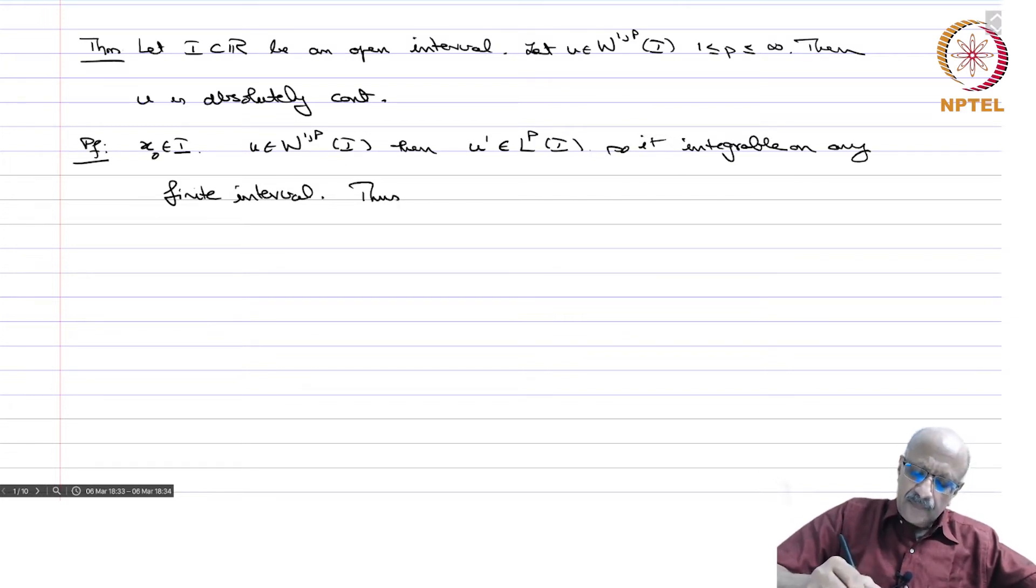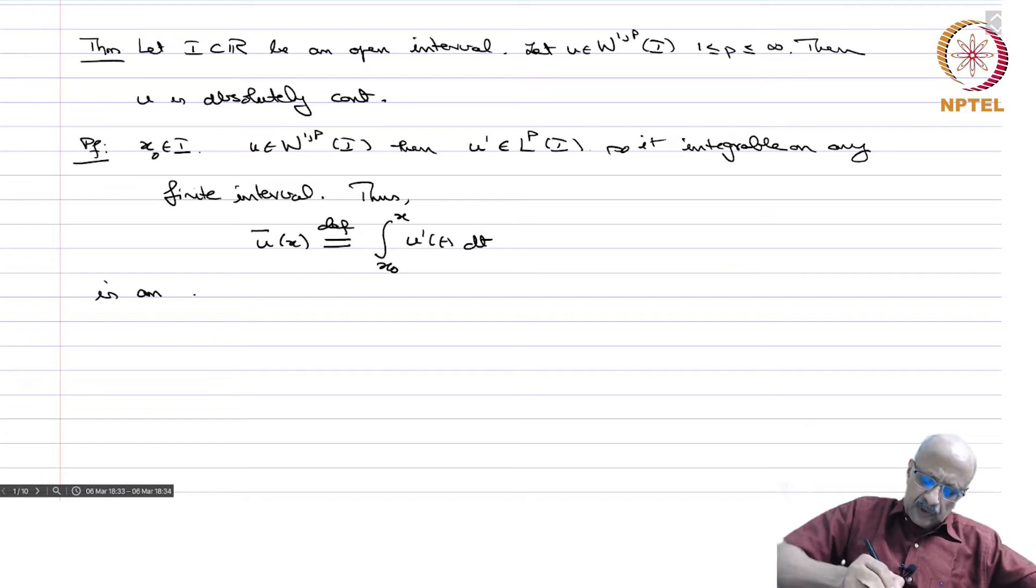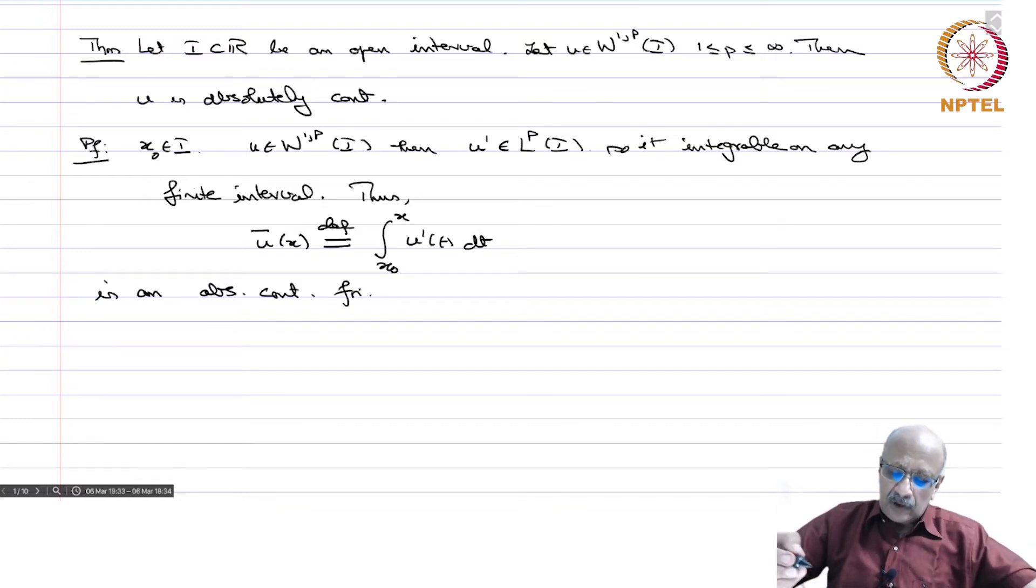Thus u̅(x) which is defined as integral x₀ to x of u'(t) dt is an absolutely continuous function. In fact, that is one of the definitions of absolutely continuous functions. You can have an epsilon-delta version also, but an absolutely continuous function is one which can be written as an indefinite integral of an integrable function, and in fact that integrand will be the derivative almost everywhere for the given function. Absolutely continuous functions are differentiable almost everywhere in the classical sense, and we also saw before that for them the distribution and the classical derivatives coincide.